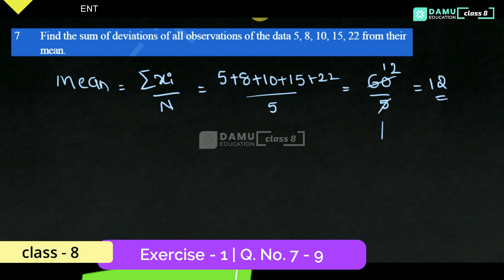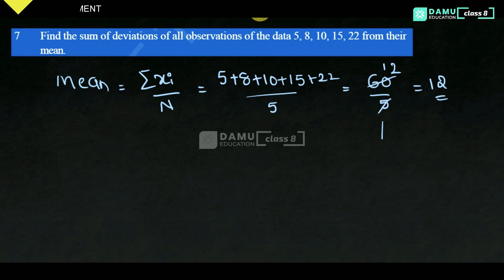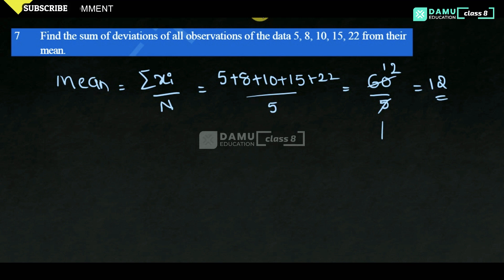Actually, they are asking for deviation values, which means from each and every value we need to subtract the mean. So for that, we need to subtract 5 minus 12, and like that for each value.